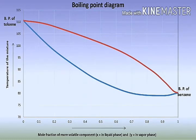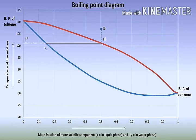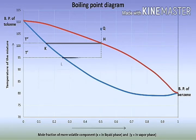Now alternatively, consider a mixture of vapours represented by point Q. When we cool it down to temperature T'' degrees Celsius, condensation will start at point H. The first drop of liquid formed will have the composition represented by point K. During this condensation, the less volatile component will tend to condense first. If we further cool the vapours to T' degrees Celsius, we get liquid represented by point I and vapour represented by point N.